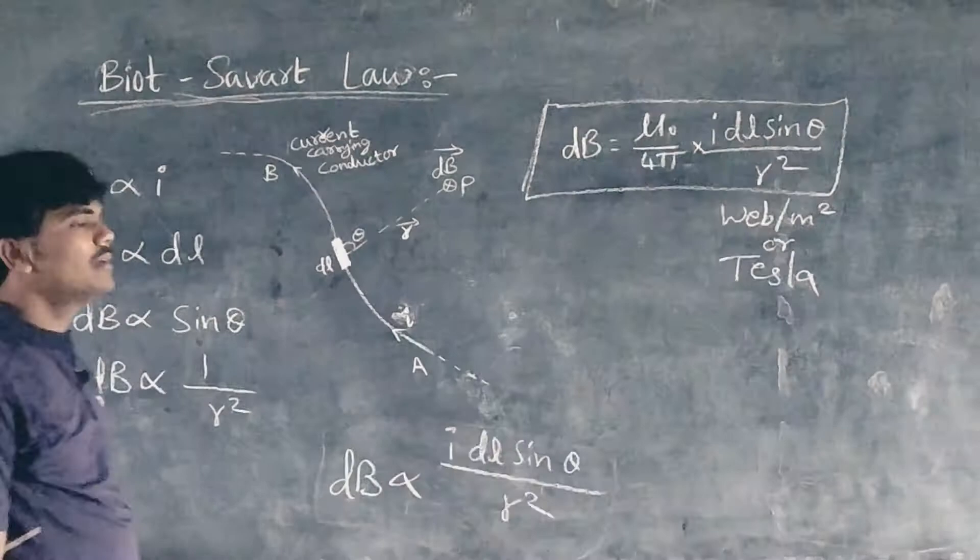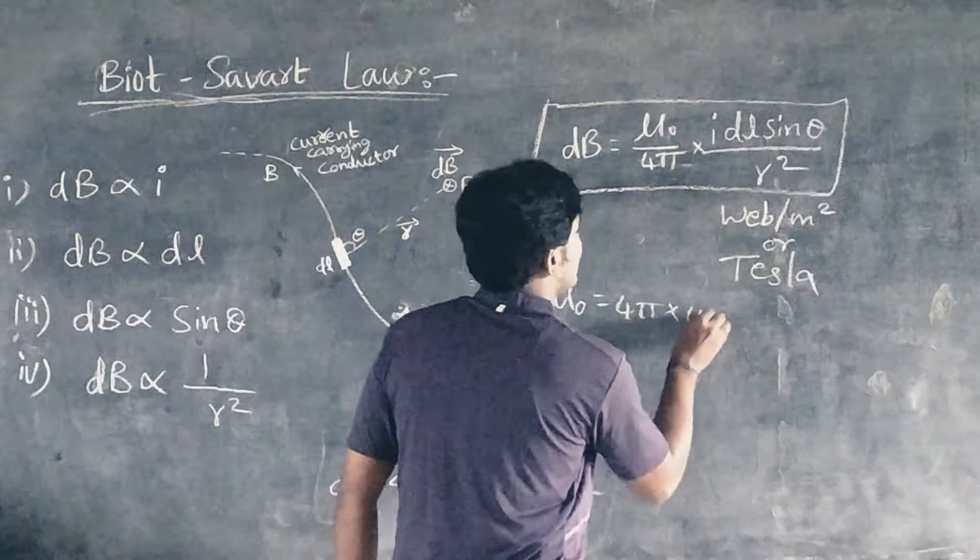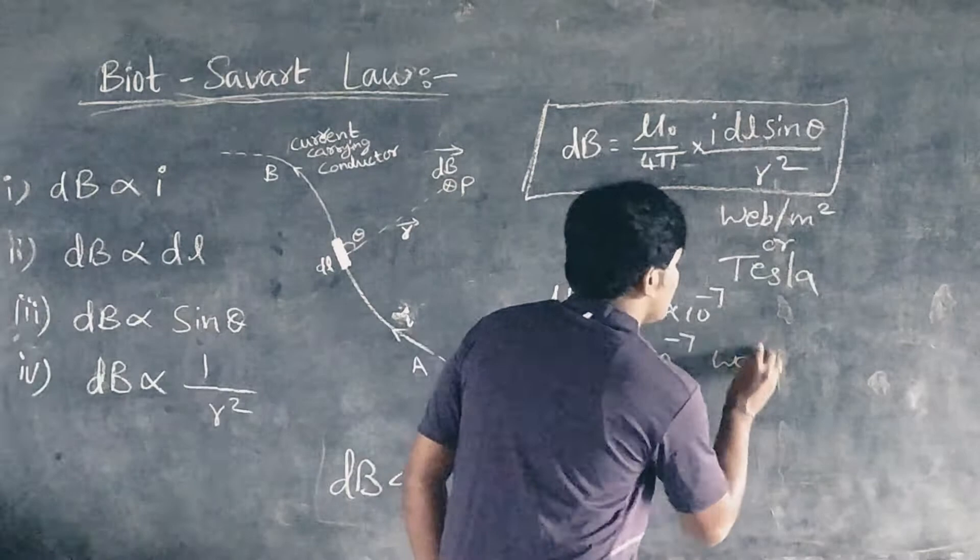We have the value for mu naught, that is equal to 4 pi times 10 to the power minus 7. Mu naught by 4 pi equals 10 to the power minus 7 weber per ampere meter.